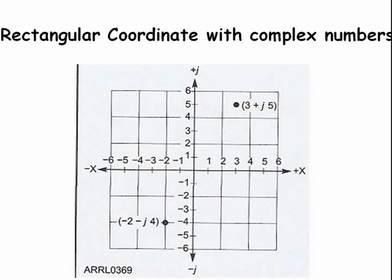We can use a variation of the rectangular coordinate system to help us with complex numbers. The axes are labeled plus x and minus x, but the y-axis are labeled plus j and minus j. For instance, one point could be 3 plus j5, and another point minus 2 minus j4.